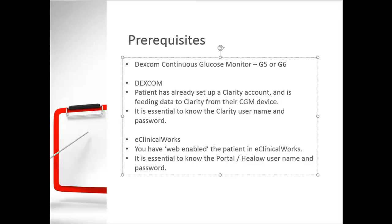Here's what you need before you start. The patient should be using a Dexcom continuous glucose monitor — they can use either a G5 or G6 version. As part of their use, they should have already set up a Clarity account with Dexcom, and that should be getting data from their device over the Clarity cloud. It is essential to have the Clarity username and password in hand.